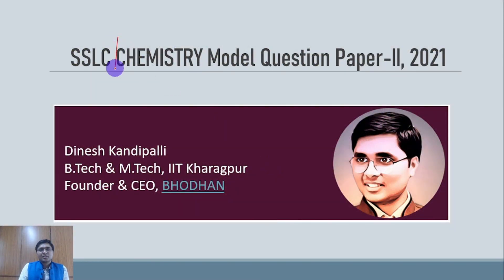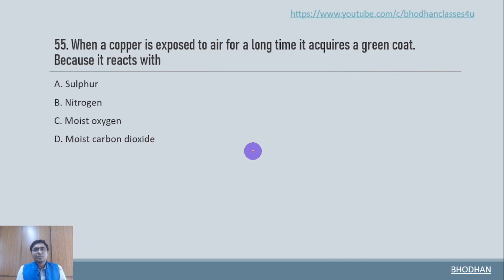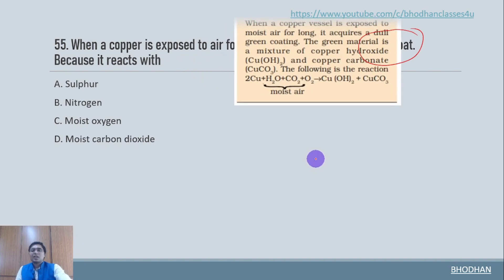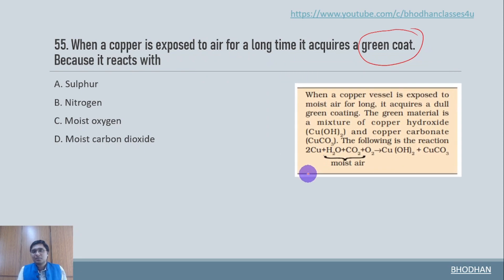In this video we will discuss chemistry questions from model question paper 2 and here is Dinesh Kandipalli. When copper is exposed to air for a long time it acquires a green coat. So this green color coating is basically the formation of a mixture. In order to understand that mixture we need to know the reaction involved.